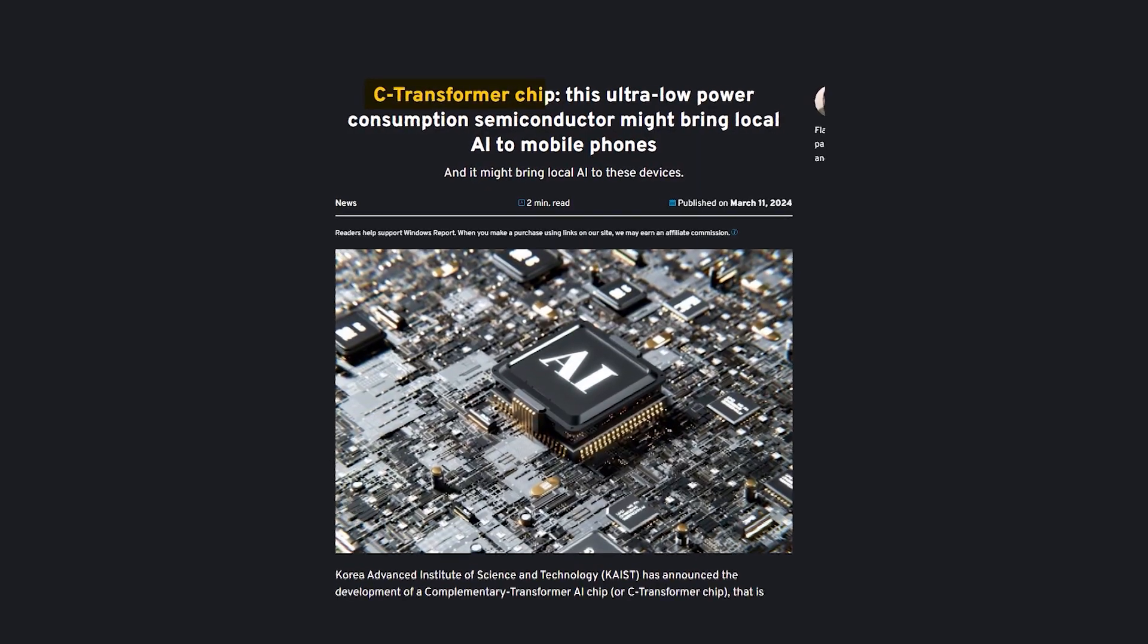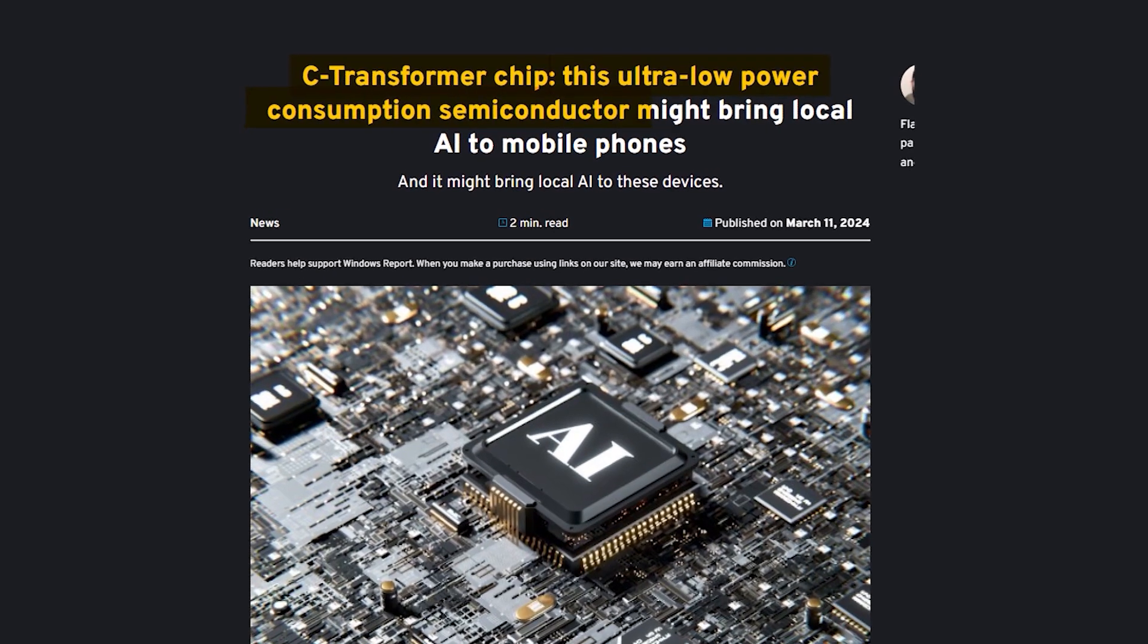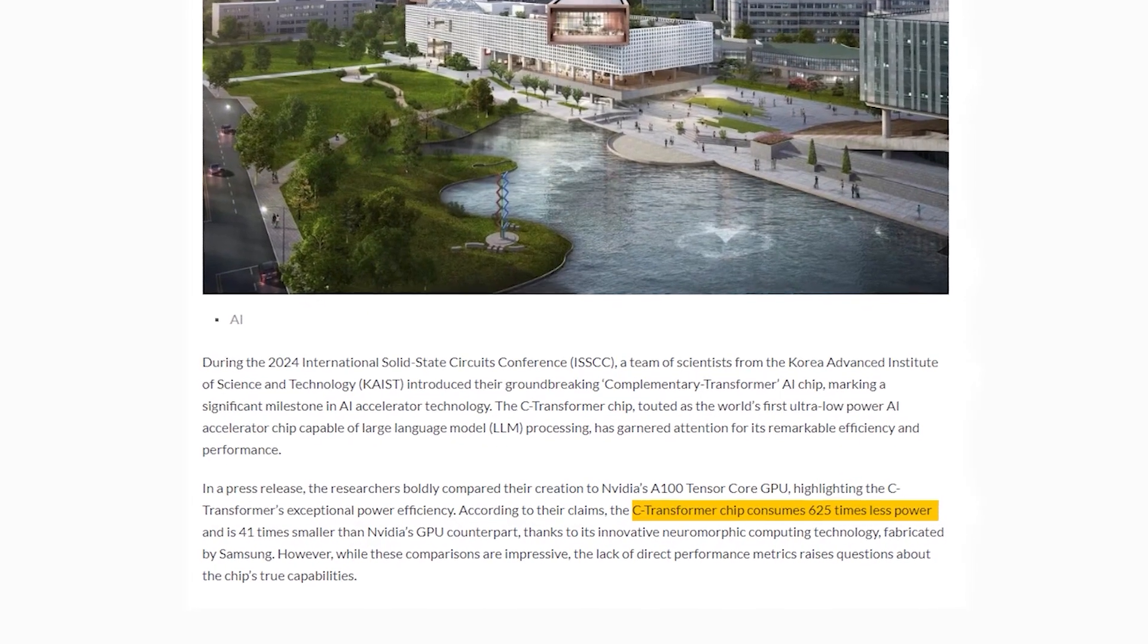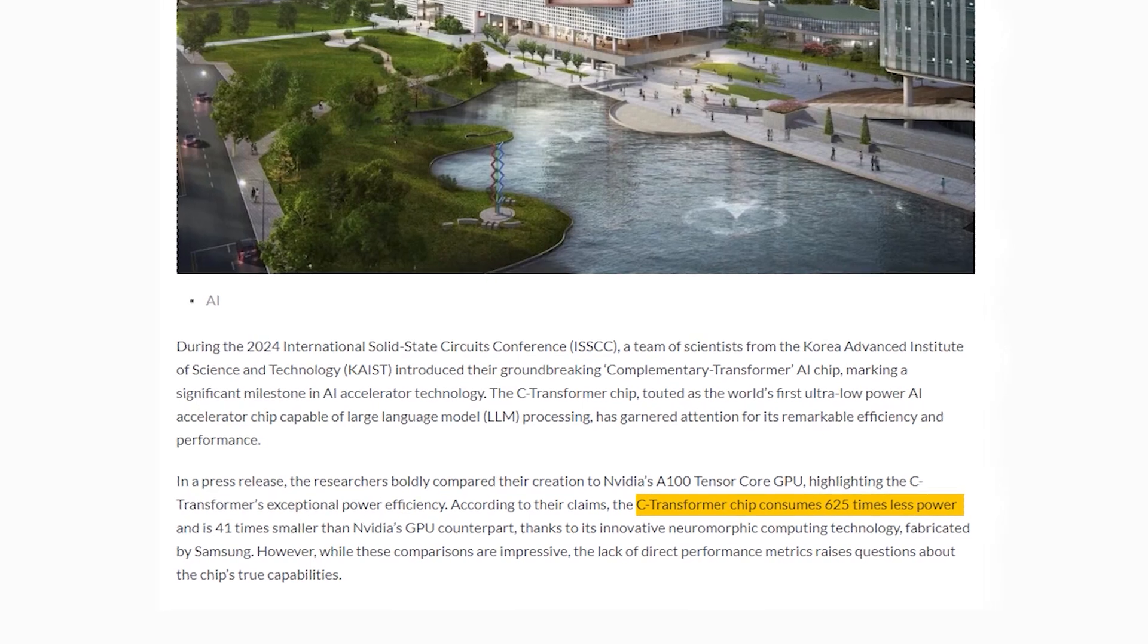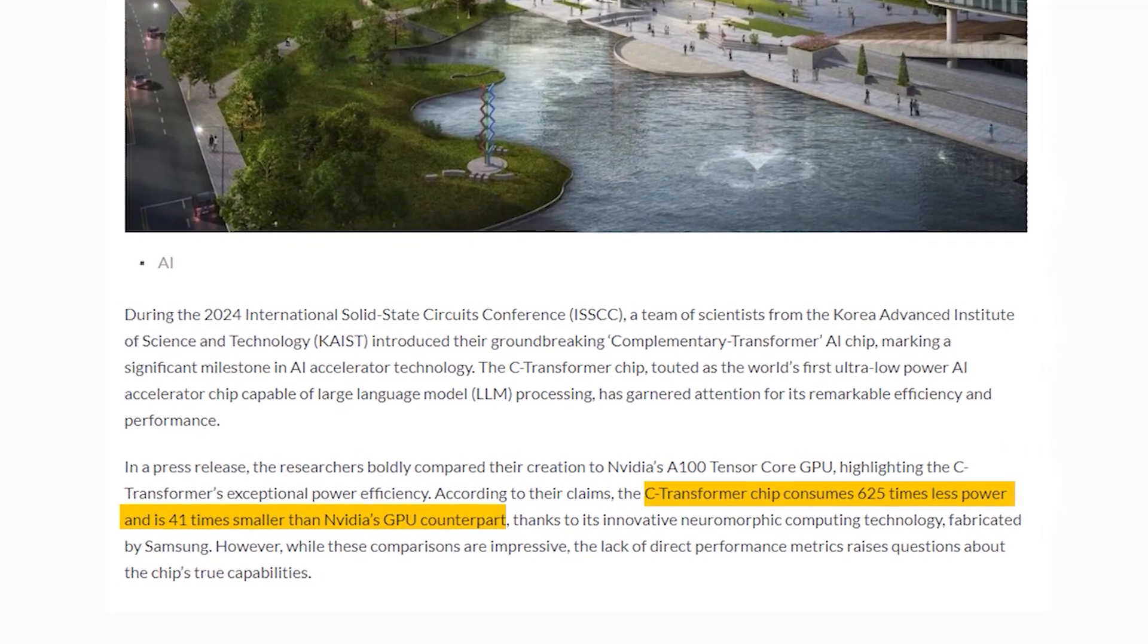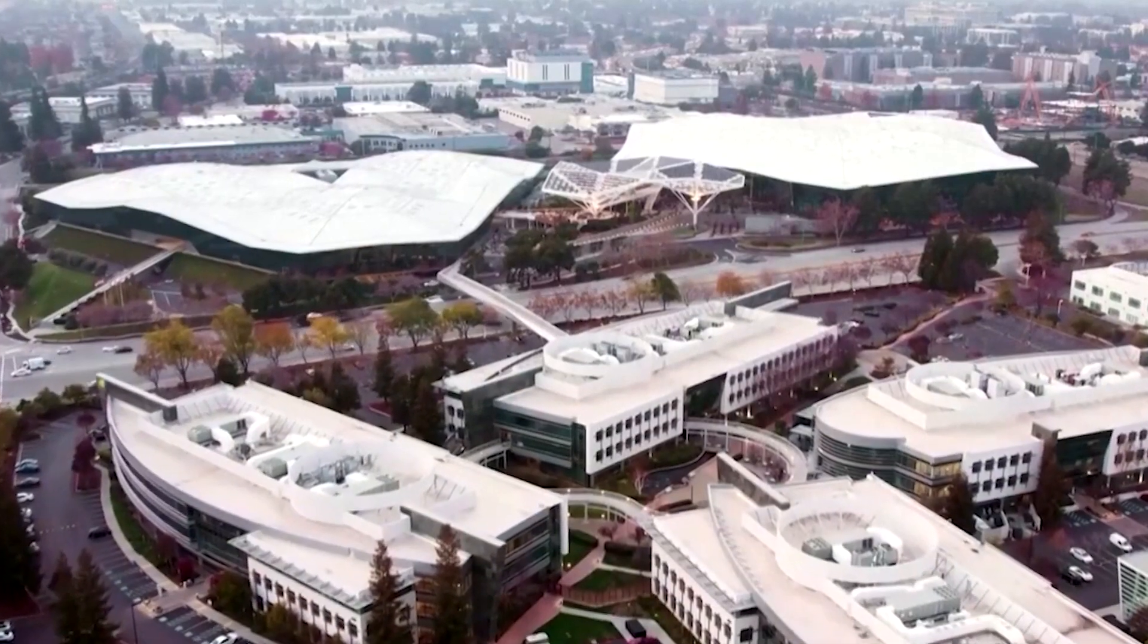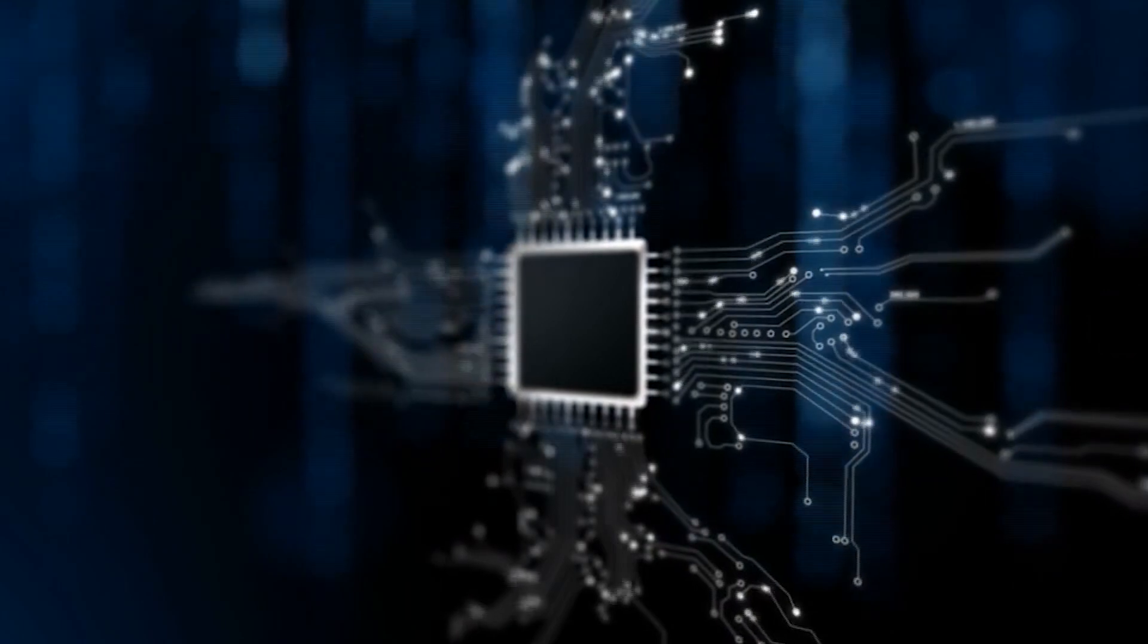They developed the C-Transformer chip, challenging NVIDIA's dominance with its unprecedented efficiency. It operates on 625 times less power than NVIDIA's A100 GPU and is 41 times smaller, signaling a major advancement in AI technology and promising to revolutionize the industry with its compact size and power efficiency.